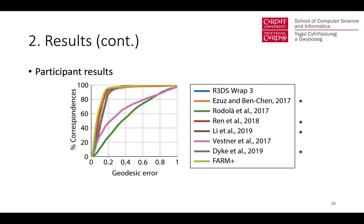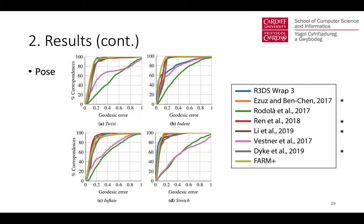For all methods, FarmPlus performs best overall but requires initial rigging, making it semi-automatic. Rand et al. performs best of any fully automatic pipeline. Regarding different poses, all methods achieve the best accuracy on indent poses, likely due to limited deformation. The twist poses proved most challenging with the lowest average accuracy — none of the methods modeled twisting deformations well. Wessner et al. and Rudol et al. performed worst on these poses, and R3DS performs particularly poorly on the indent pose due to one problematic scan.